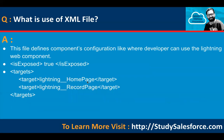What is the use of the XML file? This file defines the component's configuration — like where the developer can use the Lightning Web Component. By default, the isExposed option is false. But if you want to use your component outside, like on a home page, record page, app page, or screen flow, you need to change that false to true. So isExposed should be true.